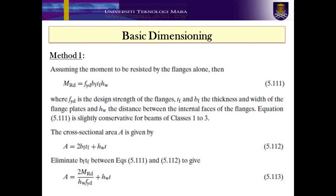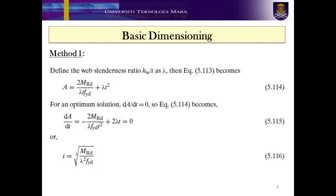In Method 1, the girder is designed by assuming that the flanges will carry the bending moment alone and the web carries the shear. Later in our example, we will use the Method 1 approach in designing a plate girder. Equation 5.111 provides the moment resistance design and this equation is slightly conservative for beams of Classes 1, 2 and 3. Meanwhile, Equation 5.112 gives the cross-sectional area of the flange. Eliminating BF and TF in Equations 5.111 and 5.112 results in Equation 5.113. By introducing HW as a slenderness parameter, Equation 5.113 becomes the area shown in Equation 5.114. To get an optimum solution, differentiate the area with respect to T, hence yielding Equation 5.115. Rearranging the equation finally gives the value of T as given in Equation 5.116.